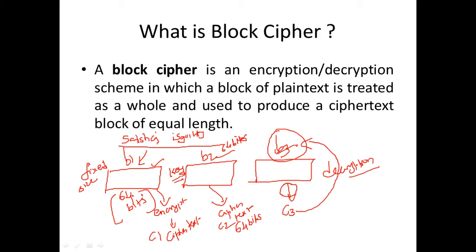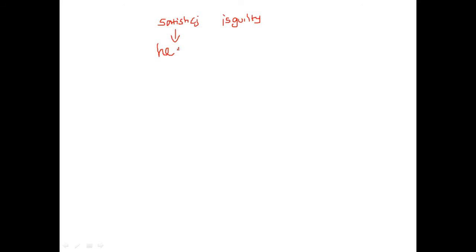The question now is how a message is broken down into blocks. Say the message 'Satish CJ is guilty' is to be broken into 64-bit blocks. First, the message is converted to hexadecimal characters. So 'Satish CJ' is converted to 16 hexadecimal characters based on the length of that part of the message.